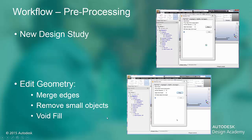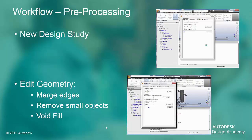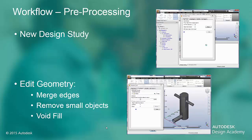Then we can edit the geometry. This is to aid in the mesh sizing for the CFD analysis. We will begin by merging the edges — this step is rarely skipped. Check for small objects and remove those extra edges too.